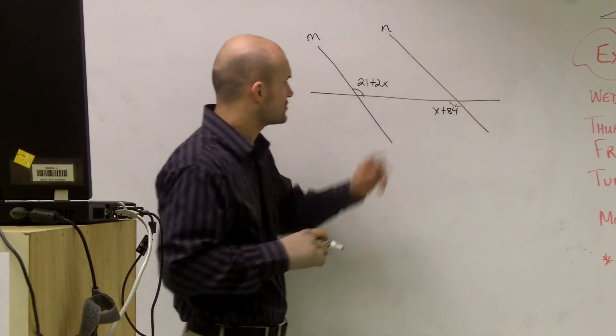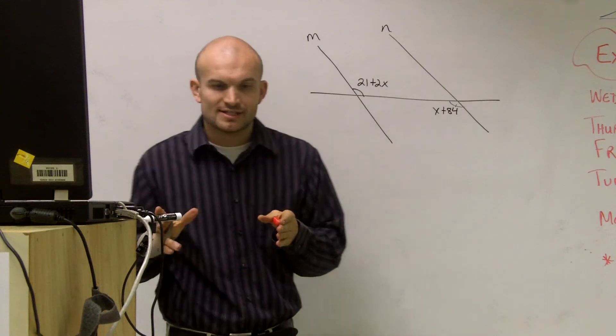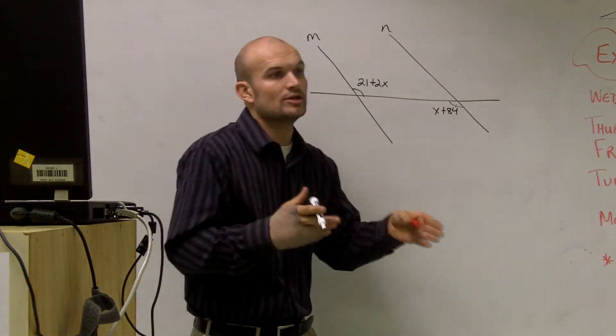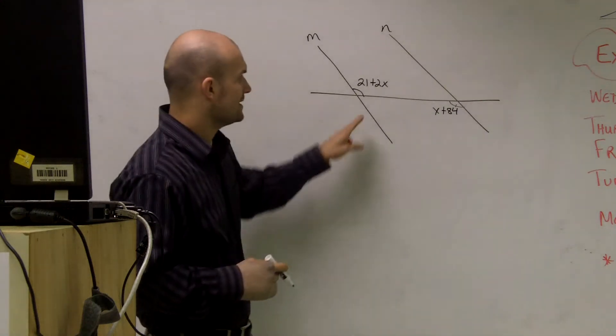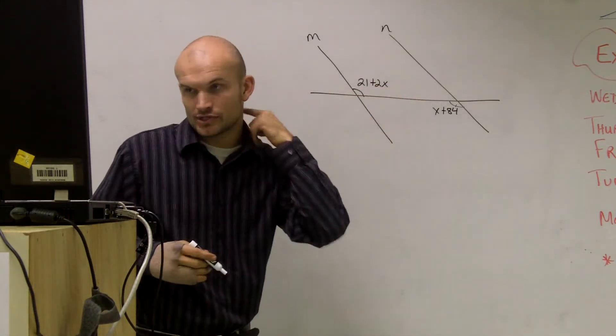They're alternating by transversal, and they're both inside of parallel lines. By the theorem of alternate interior angles, we know that when alternate interior angles are equal to each other, we have parallel lines. So what I need to do is prove for a value that these two angles are equal to each other.